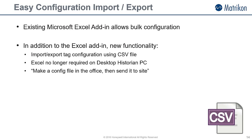Previously, Matricon gave you a Microsoft add-in menu item that allowed Desktop Historian to be configured in Microsoft Excel. Although a great feature that is still present in version 5.1, the downside was that you needed Excel installed on the Desktop Historian PC to utilize this. There is now, in addition to the existing functionality, a CSV import-export facility. This allows you to bulk input tags to be archived into Desktop Historian using a simple comma-separated value file. You can now create the configuration ahead of time and ship it to site with the installer.